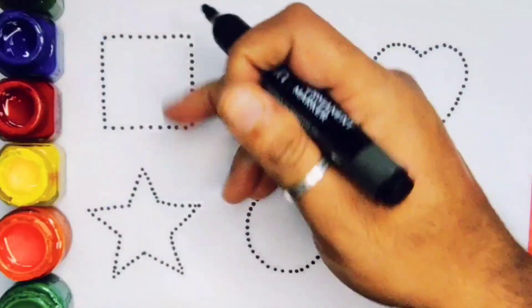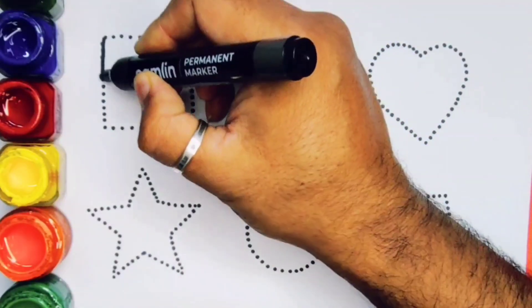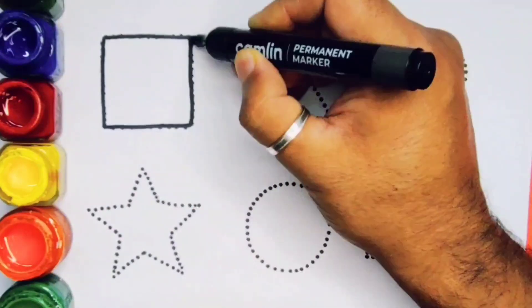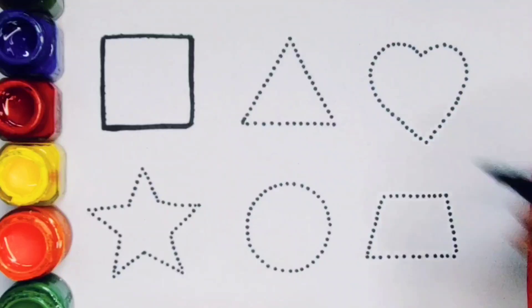Now we are going to draw the shapes. Square. This is square.